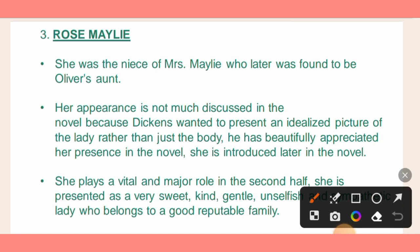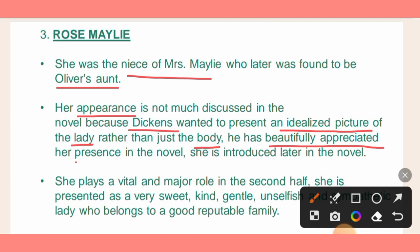The third and final character is Rose Maylie, our last character for discussion. She is Mrs. Maylie's niece and also Oliver's aunt. In terms of physical appearance, there is not much discussion about her, because Charles Dickens wanted to represent an idealized picture — not just the body, but idealized characteristics such as kindness, motherly feelings. These all represent her, and her presence in the novel is beautifully appreciated. Her introduction also comes a little late — after the halfway point of the novel.